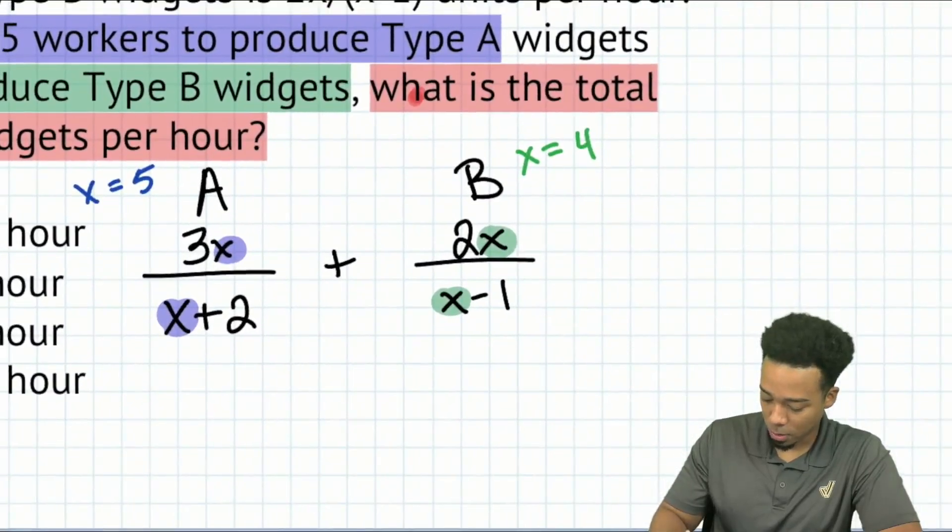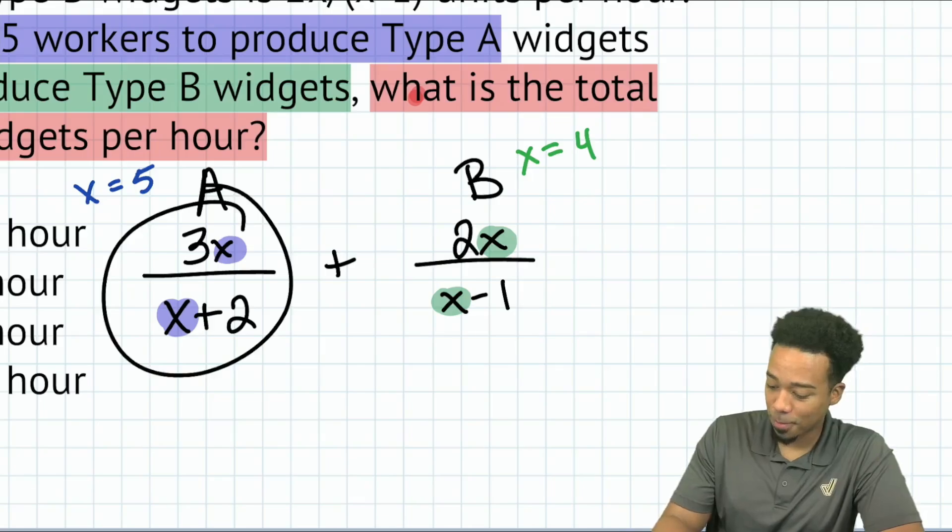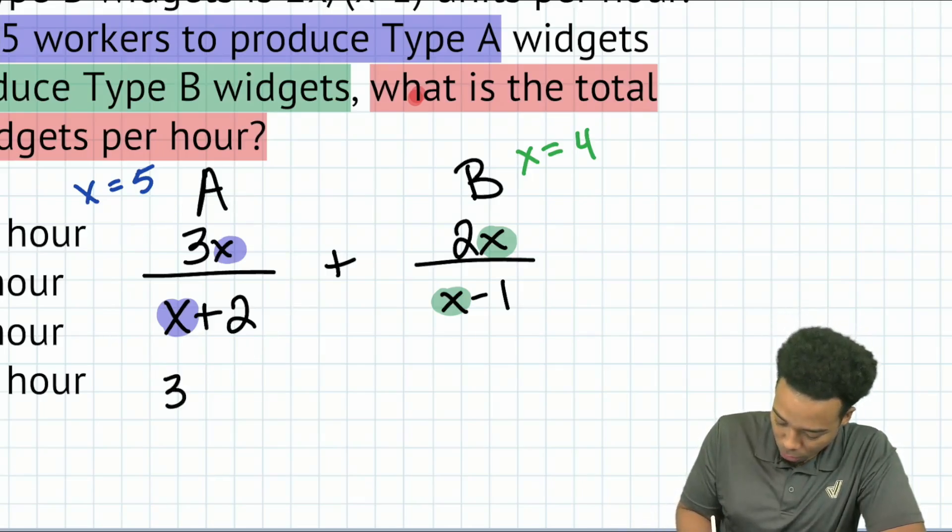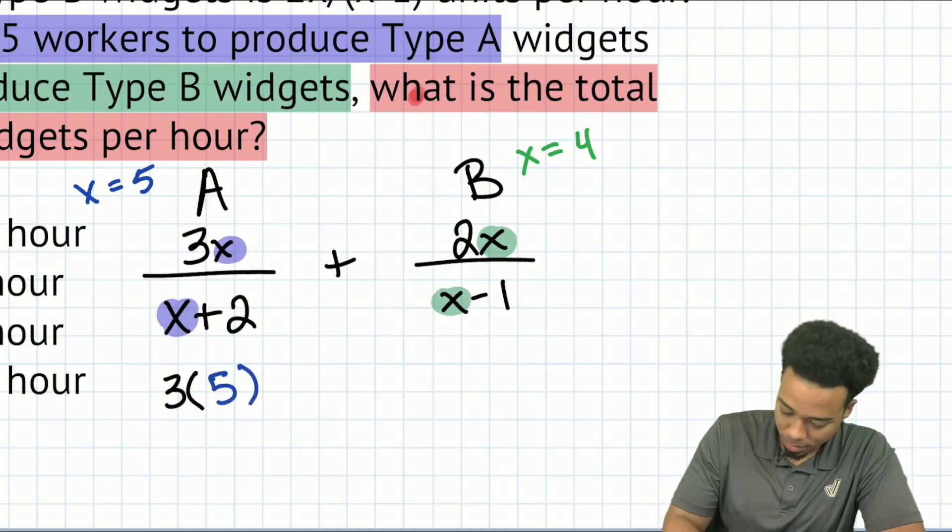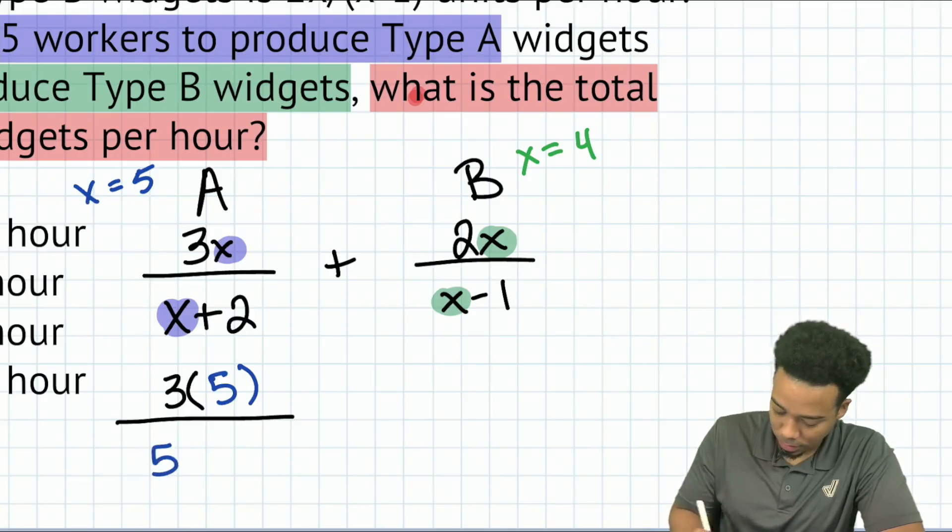So let me zoom on in over here. This first one, let's replace that with five. So we are going to have three times five, all over five plus two. Nice and easy, right?